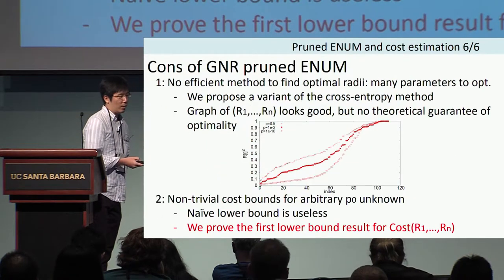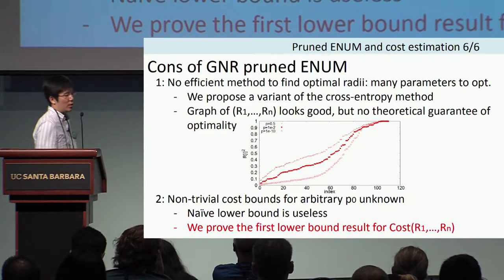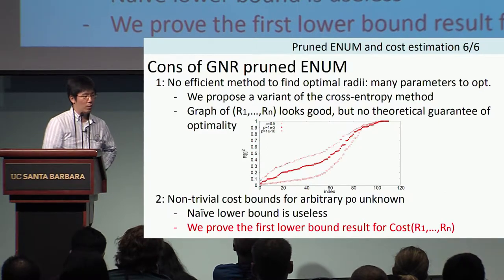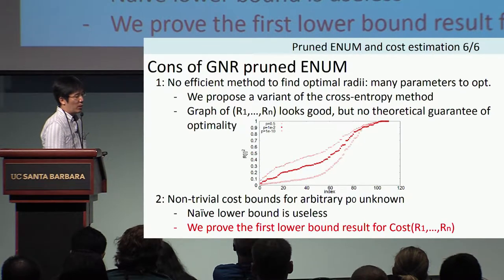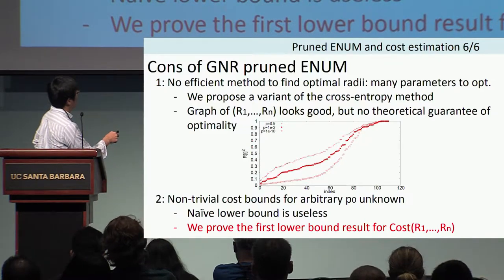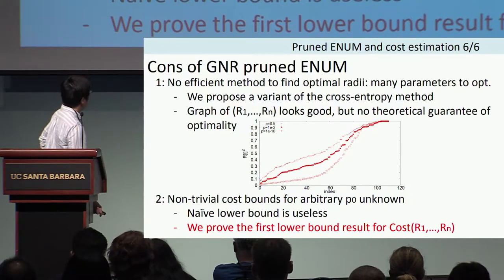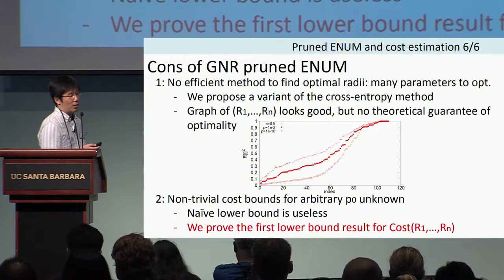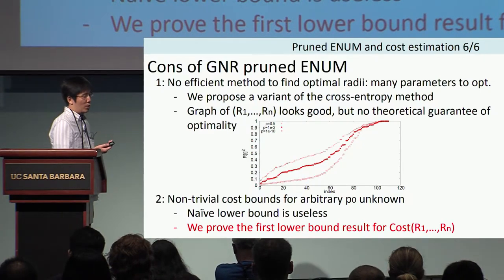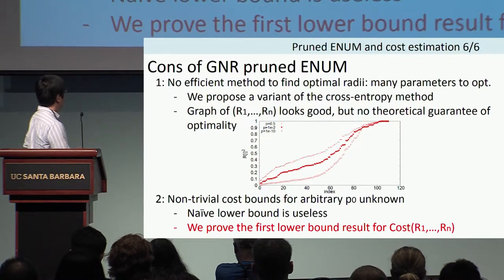On the other hand, there are some drawbacks. Currently, there is no efficient method to find the optimal radius R1 through Rn. To tackle this, we propose a variant of the cross-entropy method, but it is not sufficient yet — the resulting shape looks good, but we don't know if it is optimal. The second drawback is that no non-trivial cost lower bound is known. A naive lower bound is possible but not useful. However, for this problem, we prove the first lower bound result, which is our contribution.